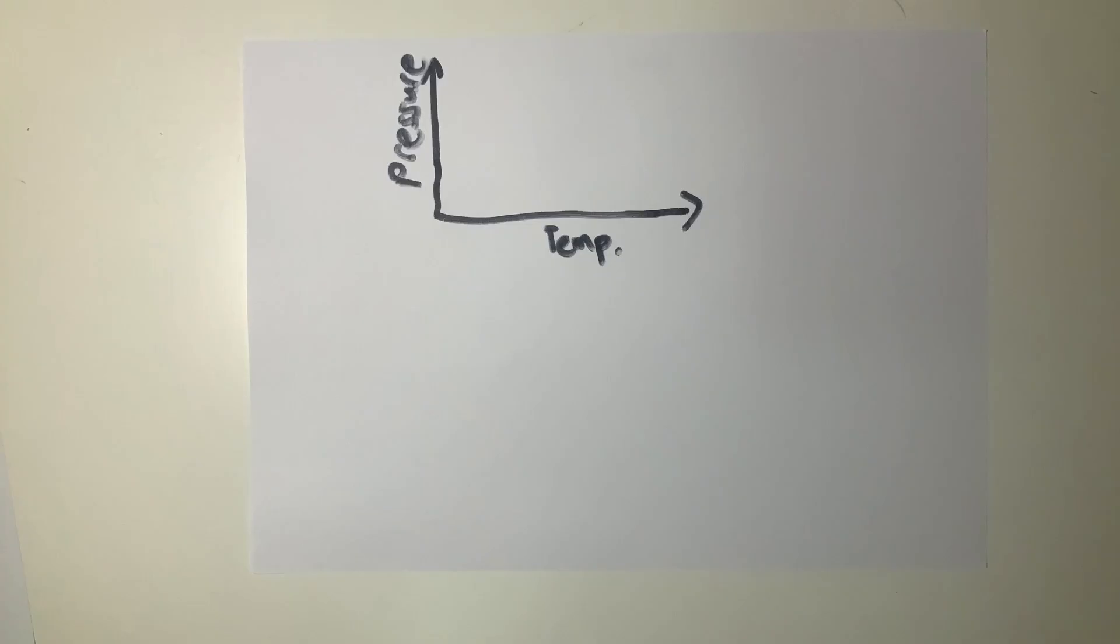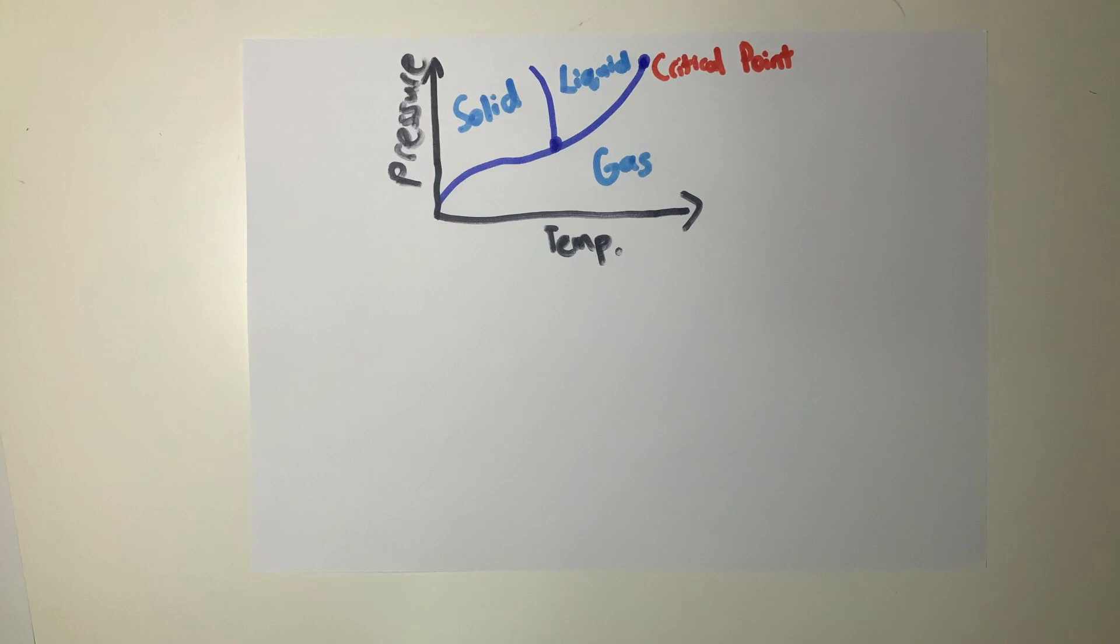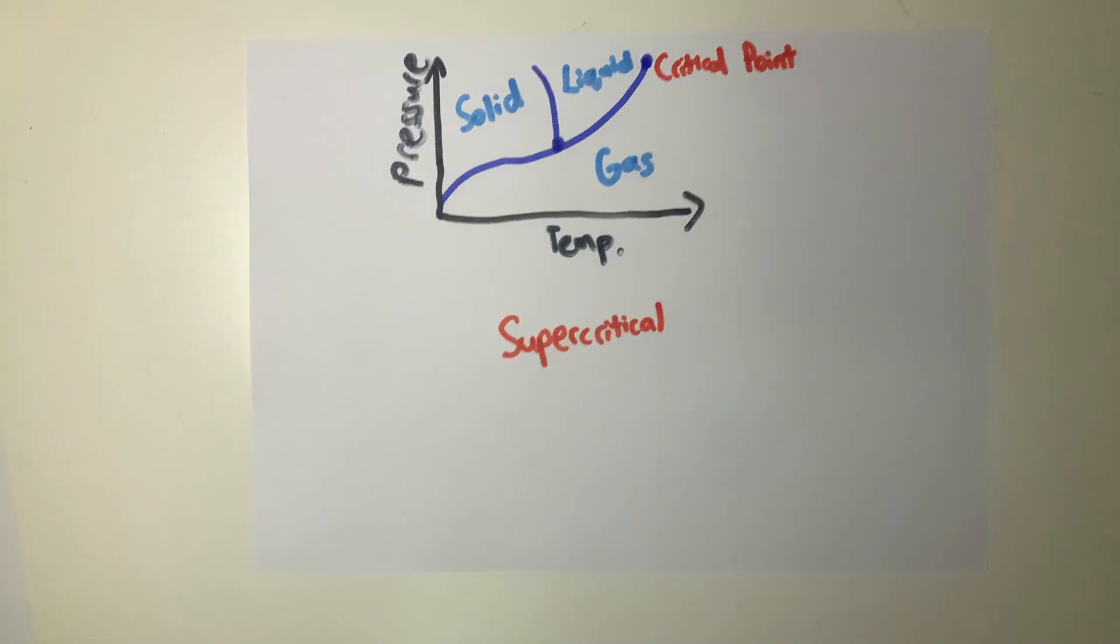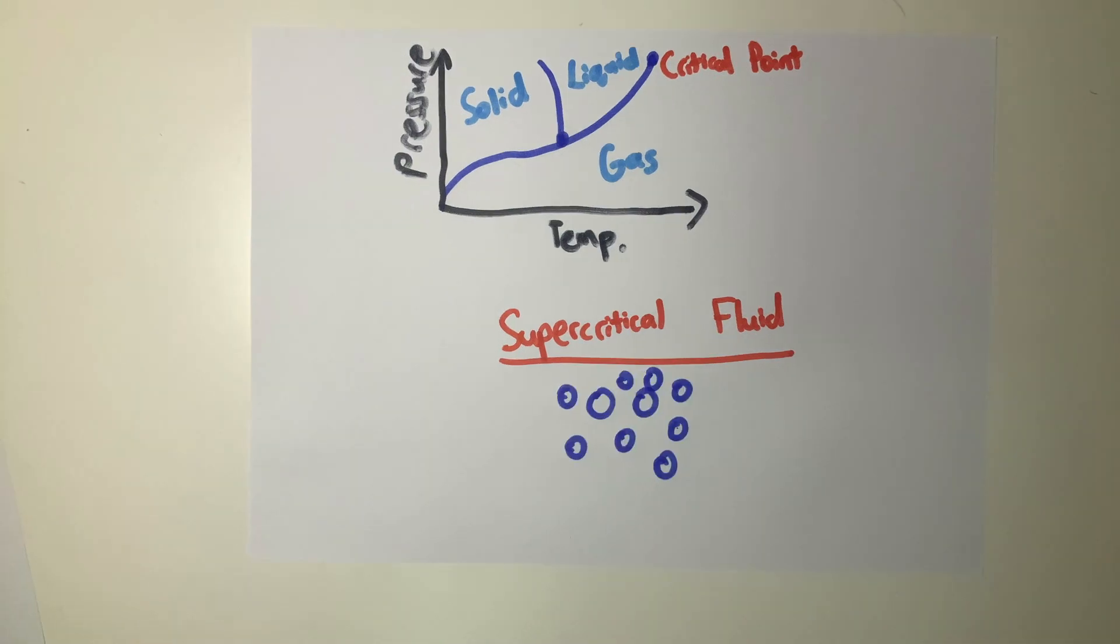When studying phase diagrams, you will find that the border between a liquid and a gas stops at a specific temperature and pressure and that's the critical point. After the critical point, the matter will become a supercritical fluid, a state of matter with both liquid-like and gas-like particles and properties.